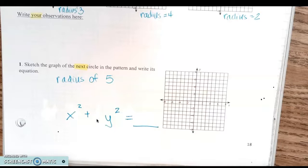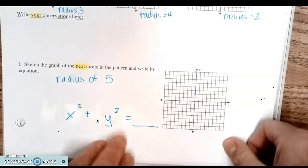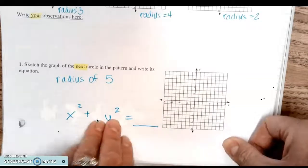Complete your equation: x² + y² = ? You take the radius of 5 and square it, so there should be a 25 there. Any questions on problem number one? Pretty easy, right? Go ahead and turn over to the top of page 19.